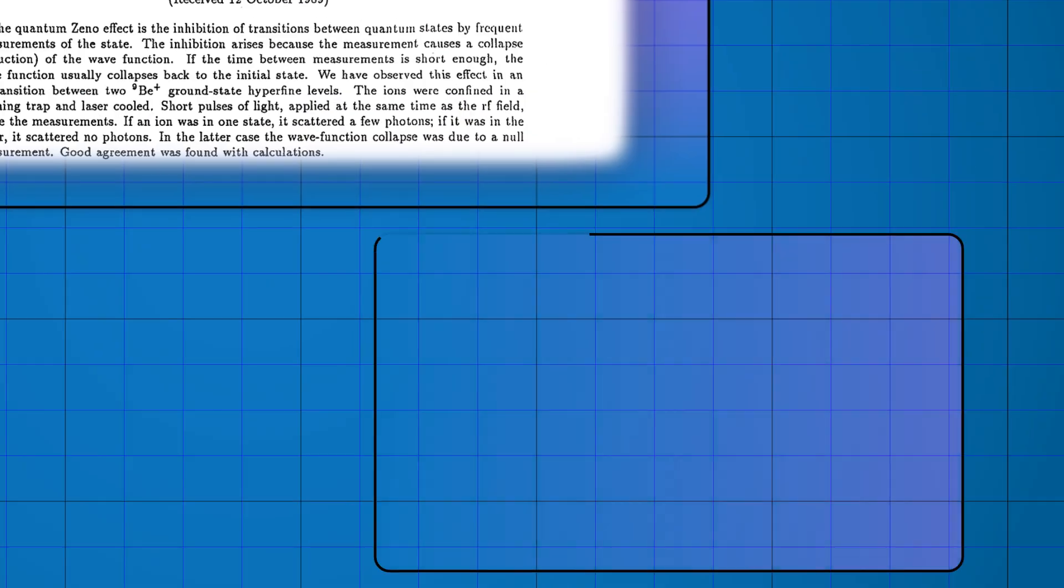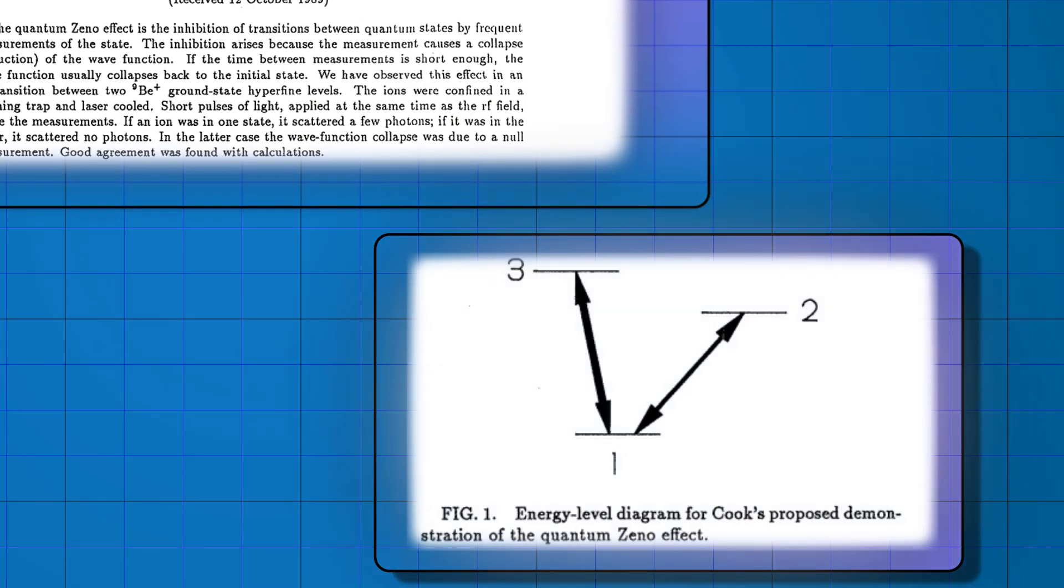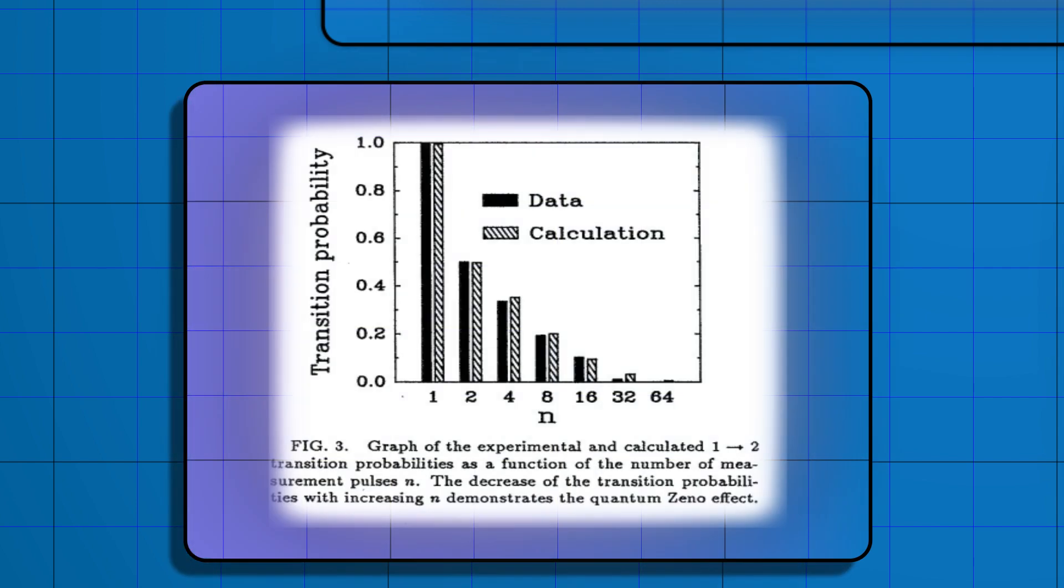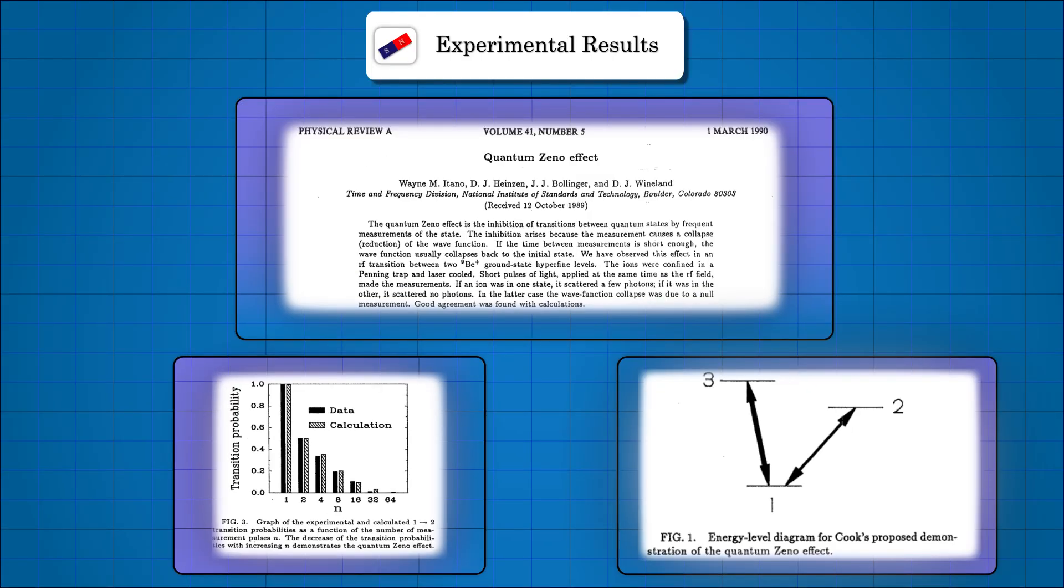A caveat: this experiment test shows another version of the Quantum Zeno Effect. In this experiment, you can rotate your qubit simply by performing a sequence of measurements rather than evolving it. More on this in a future video.